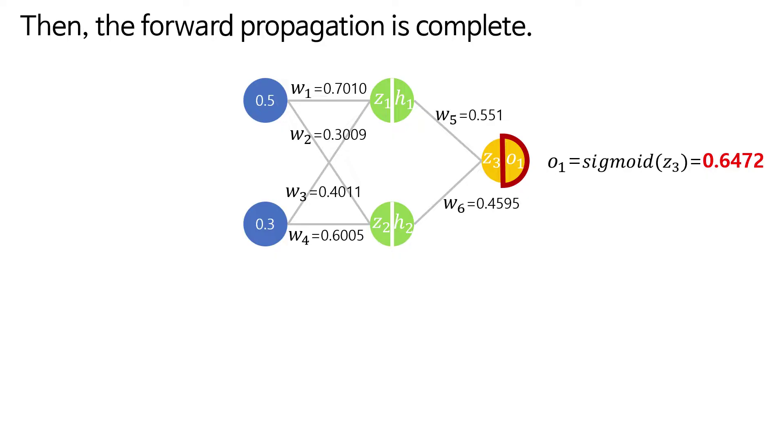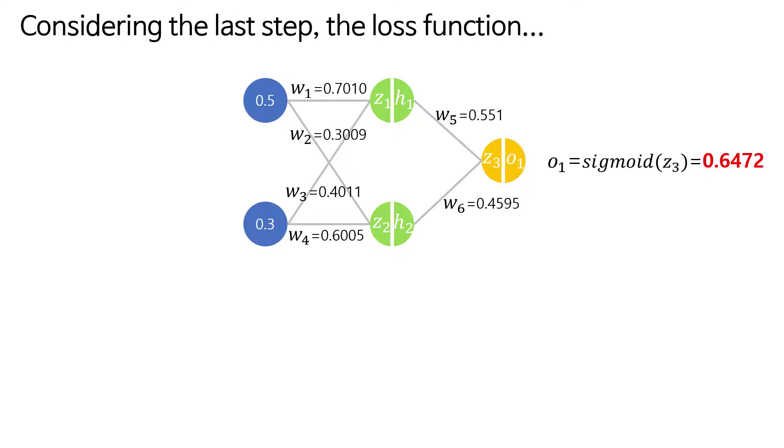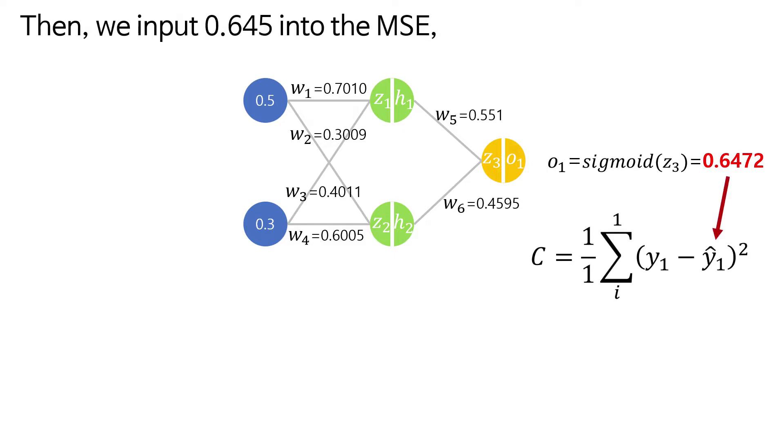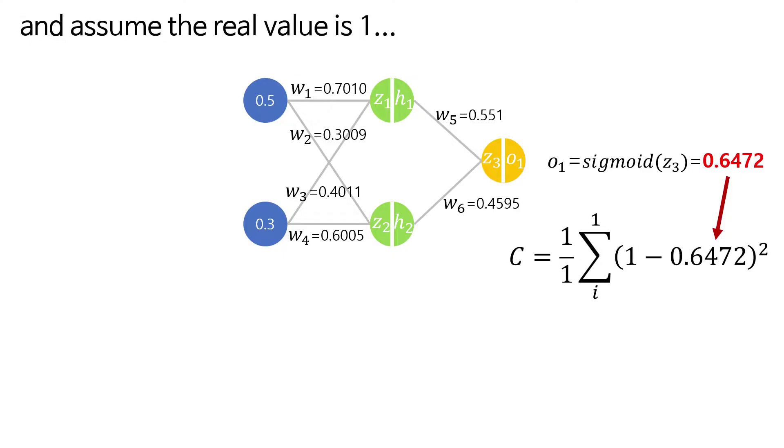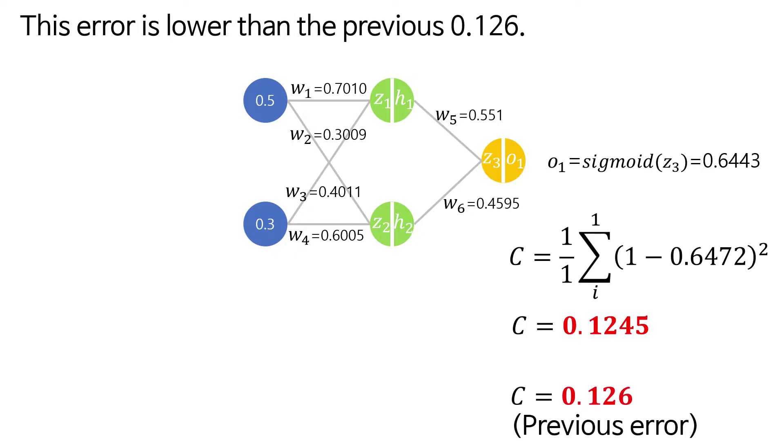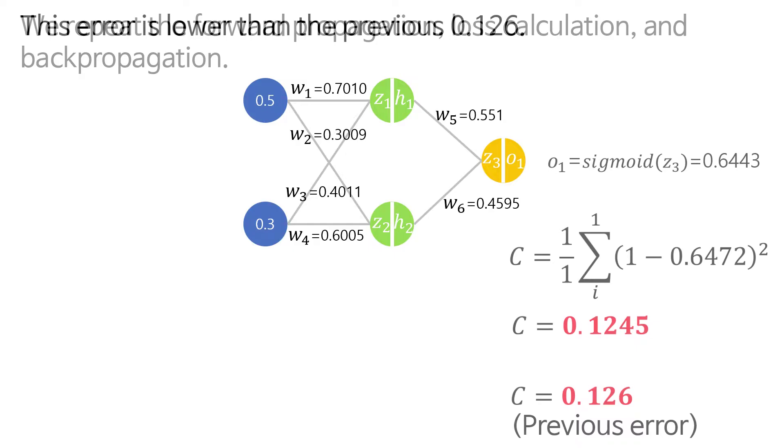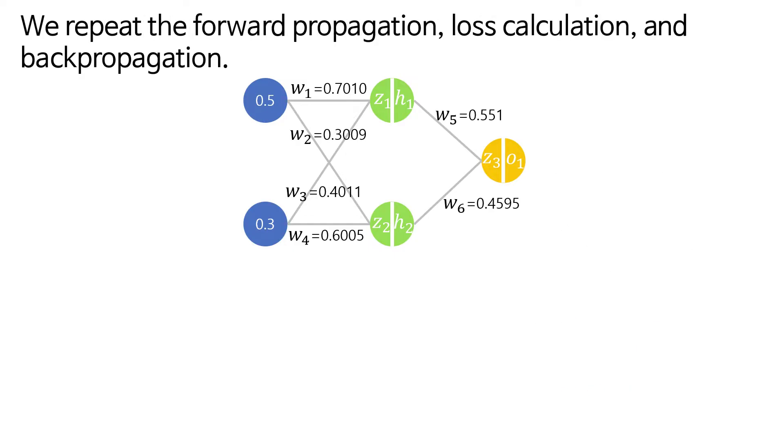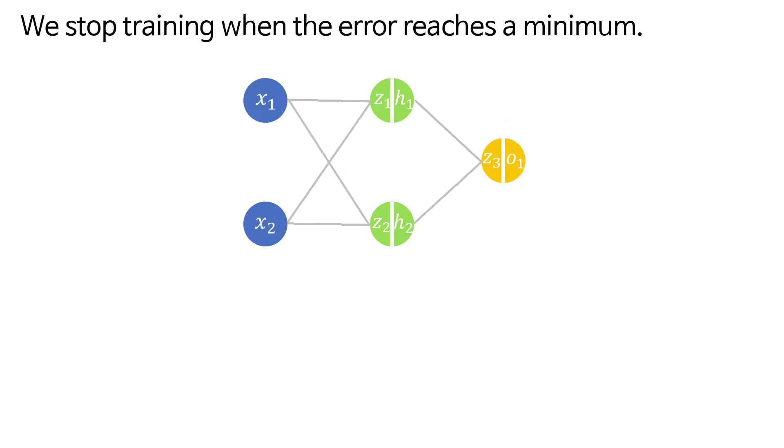Then the forward propagation is complete. Considering the last step, the loss function, we input 0.645 into the MSE and assume the real value is 1. We get an error c of 0.1245. This error is lower than the previous 0.126. We repeat the forward propagation, loss calculation, and backpropagation. We stop training when the error reaches a minimum.